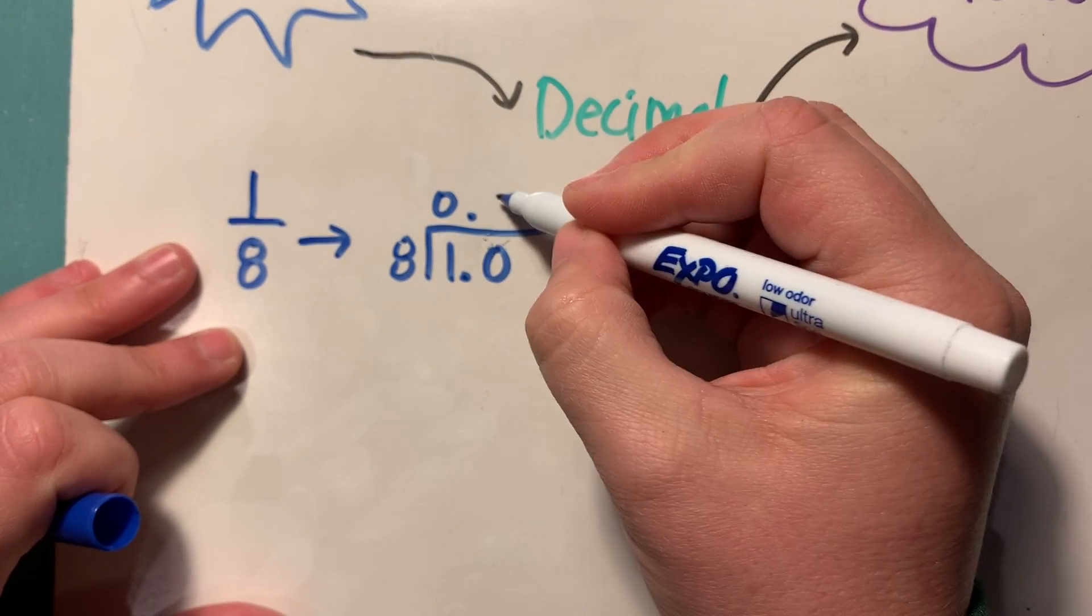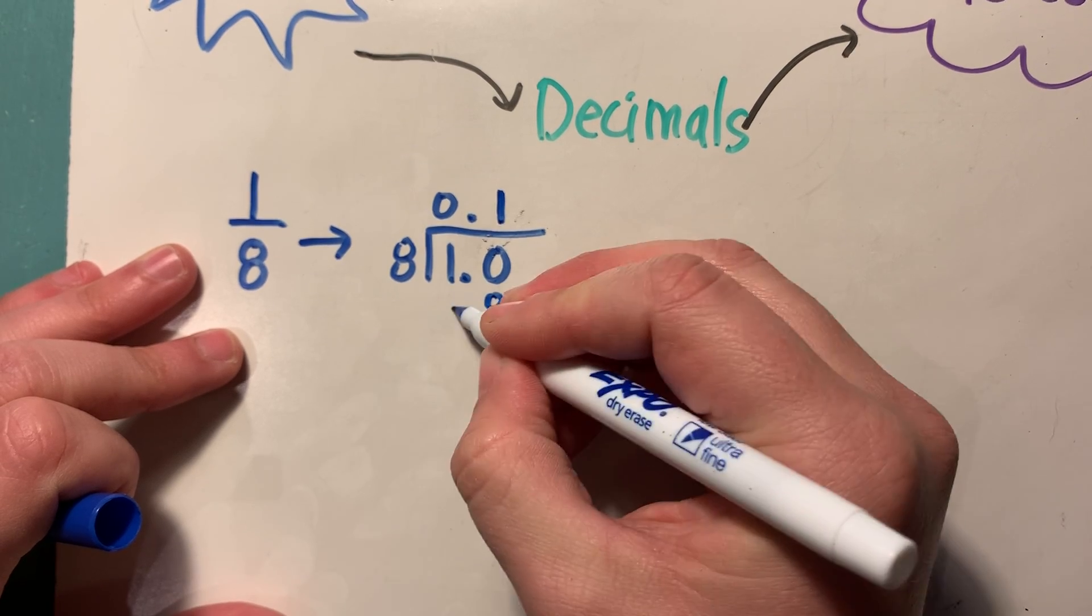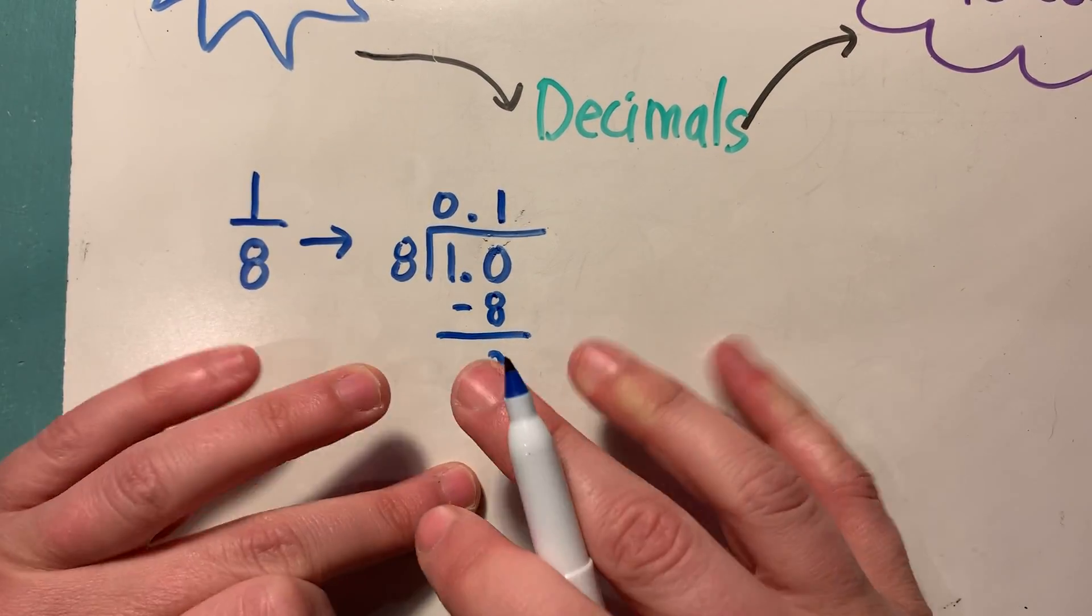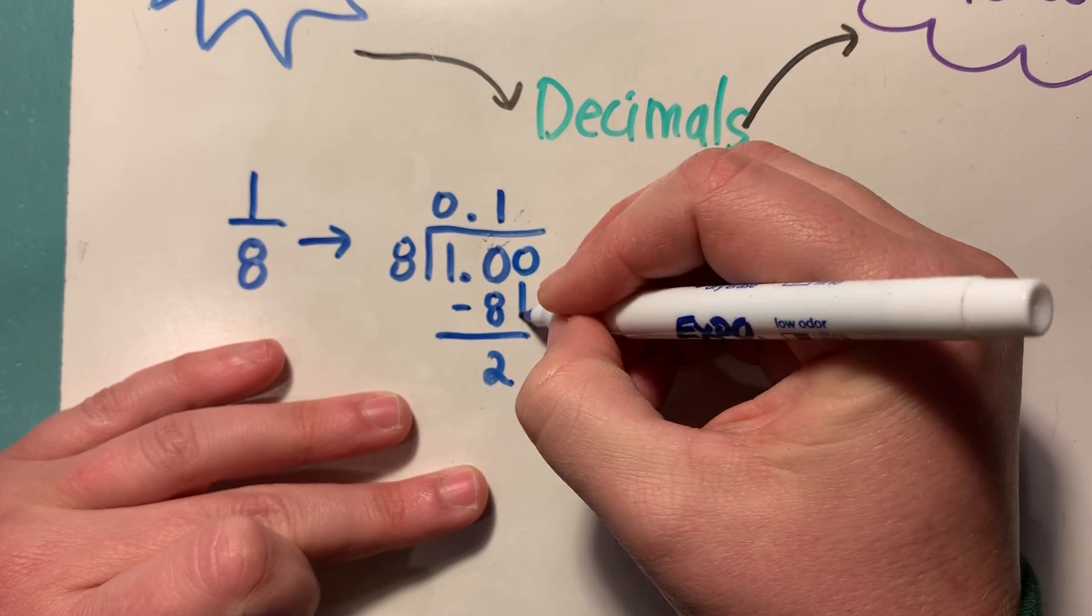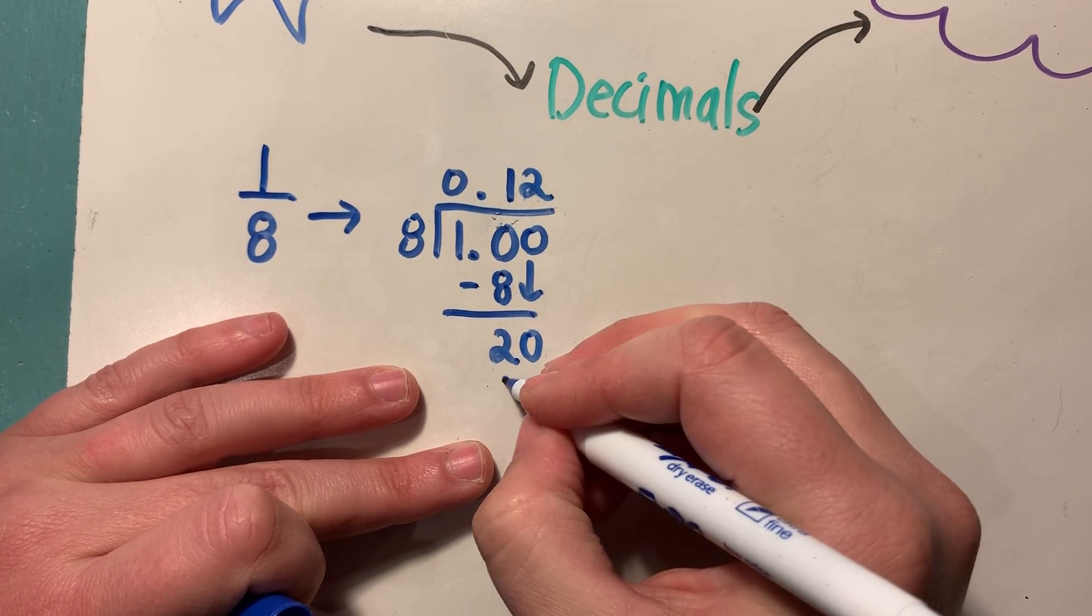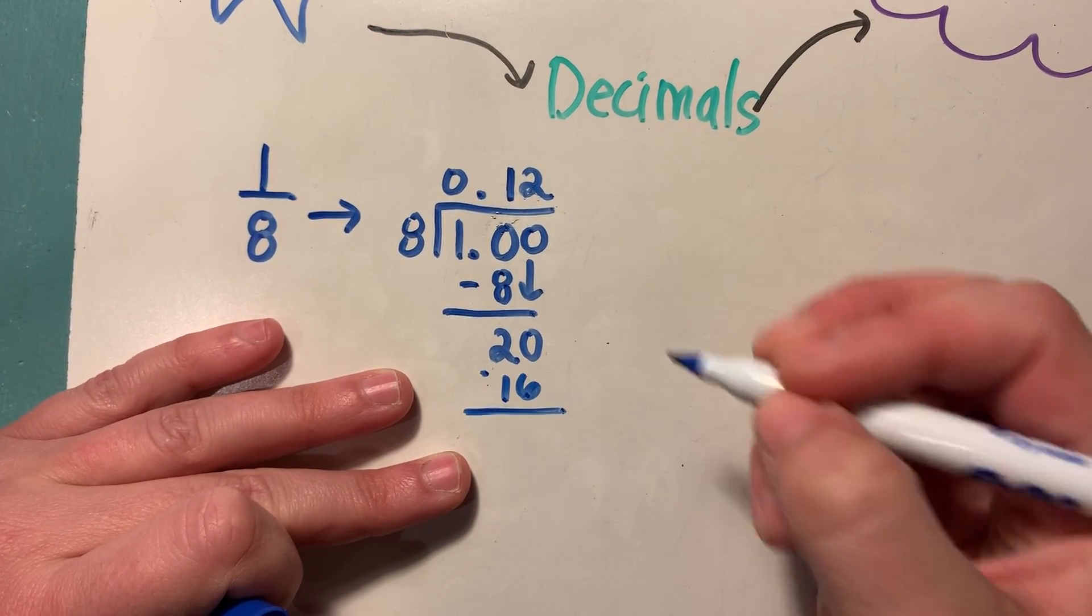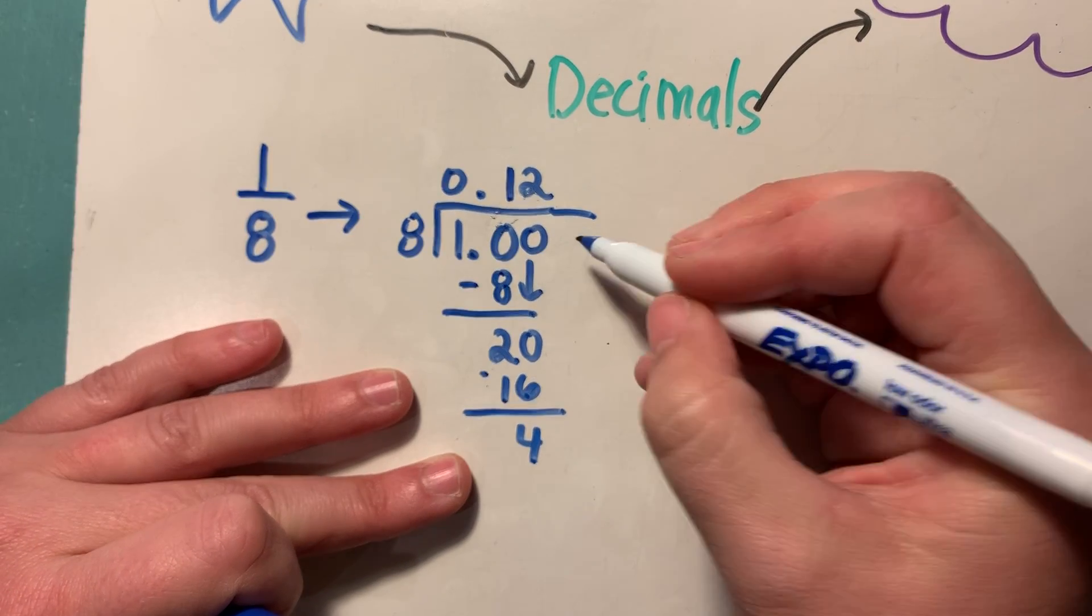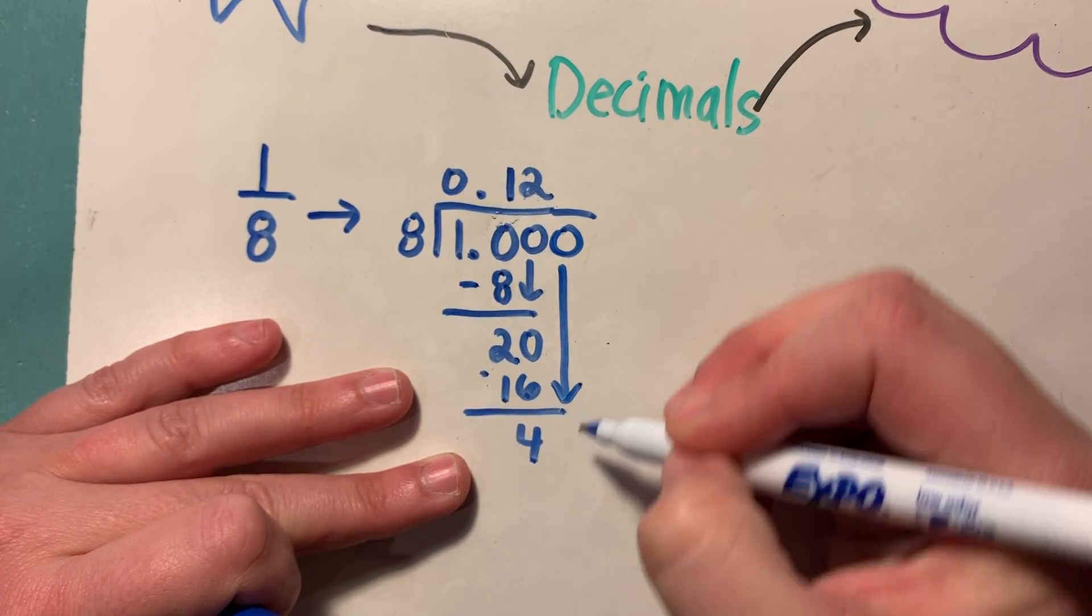So eight does not go into one, but it goes into 10 one time. And I subtract and 10 minus eight is two. I have a remainder, but it's all good because I add a zero and I drop it down. Eight can go into 22 times and I get 16. I'm going to get another remainder, but I'm not going to freak out because I can drop a zero down.